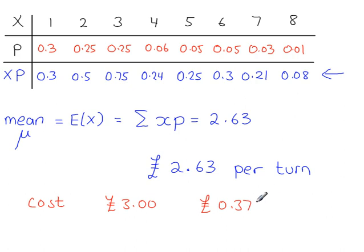So, if 100 customers came along, then the profit would be this much per turn times the 100 spins, one spin per customer, that would give you a profit of 37 pounds, and so on.